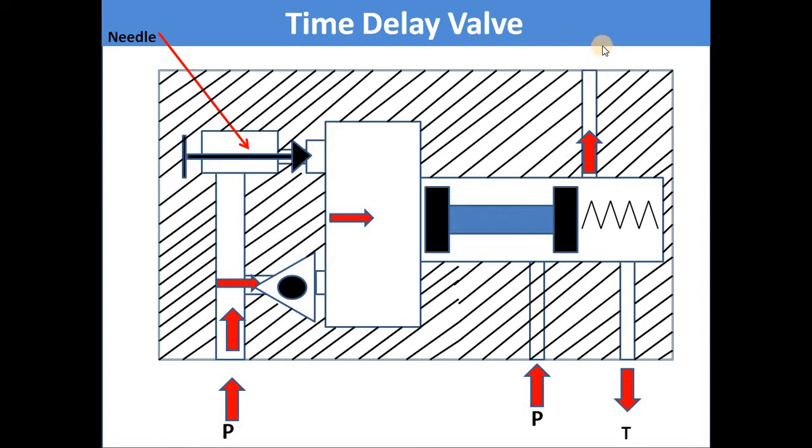When the stroke is completed and you cut the P port, the medium in the air reservoir leaks from the needle. The leaking time depends on the time delay setting. When pressure in the air reservoir drops,